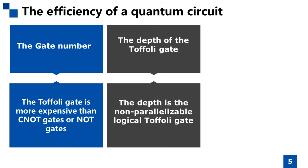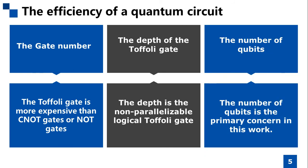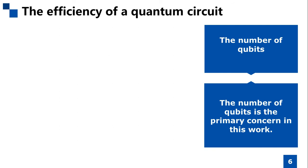The second measure is the depth of a quantum circuit. Since the Toffoli gate is important, we focus on the Toffoli depth in this paper. The third measure is the number of qubits, which is relevant to implementation today. The lower the number of qubits, the sooner the quantum algorithm can be implemented on a real quantum computer. As a result, the number of qubits is the primary concern in this work.